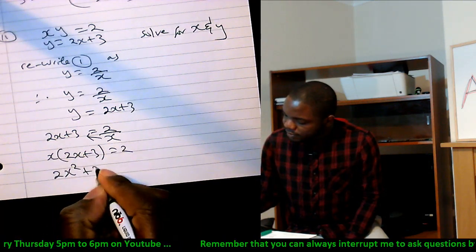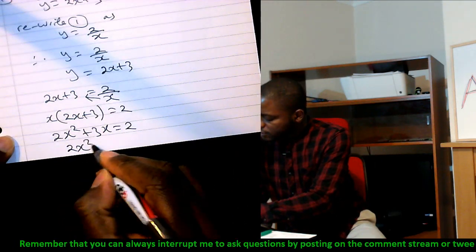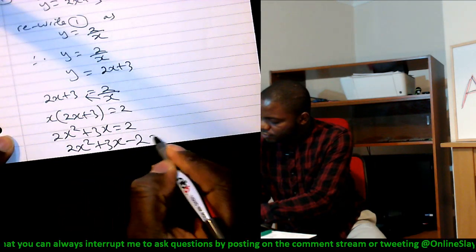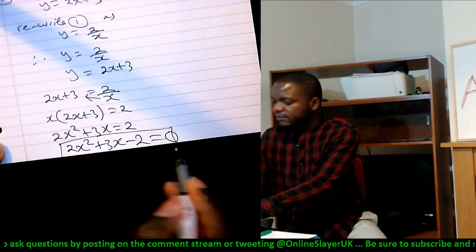2x squared plus 3x equals to 2. Bring the two to this side, so you've got 2x squared plus 3x minus 2 equals to 0. So you're simply trying to solve for the roots of this quadratic.